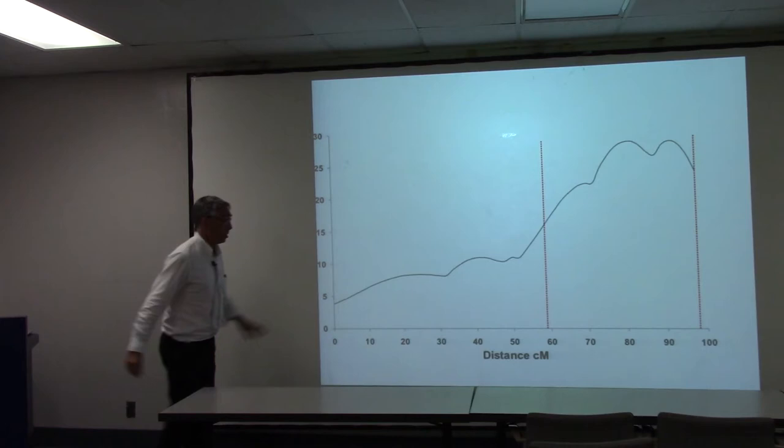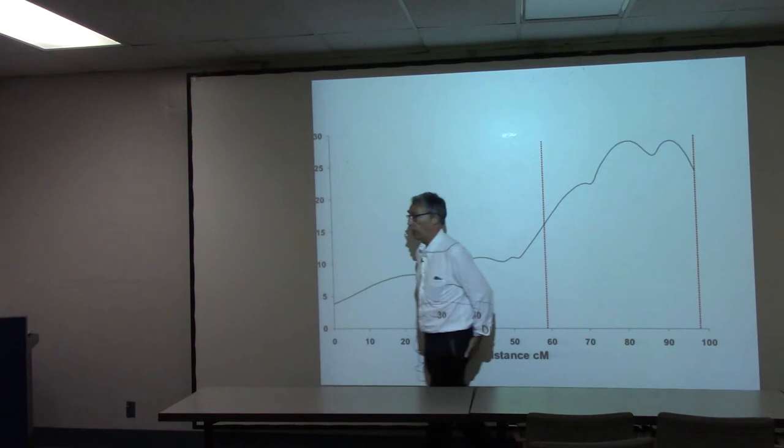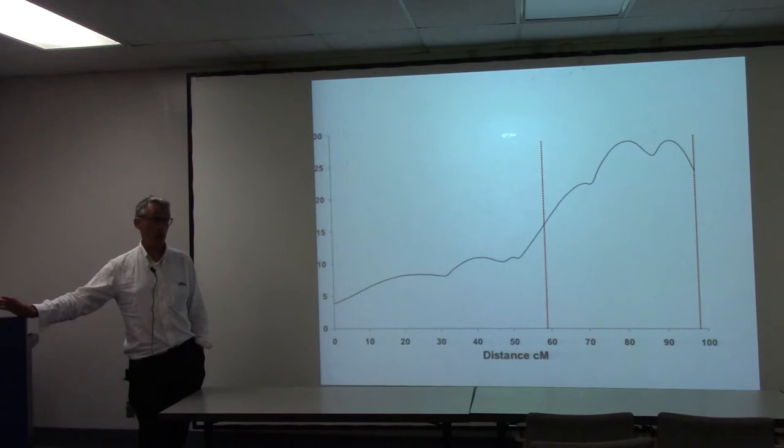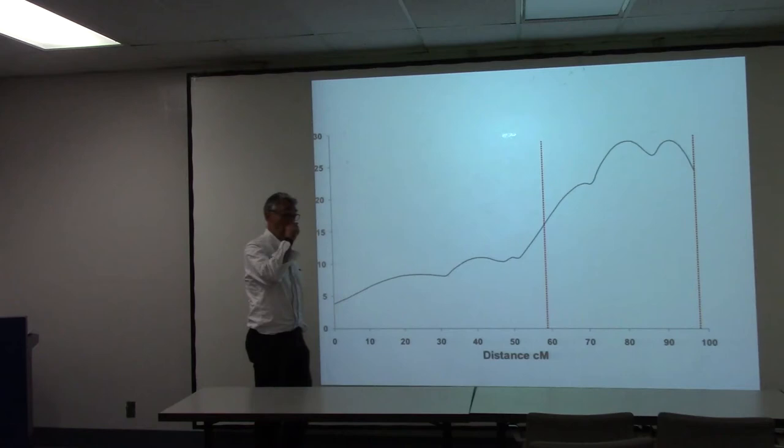We have been thinking about how to reduce this interval to ideally get down to the causative variant, or at least the gene. The nice thing about working in model organisms is that you can do experiments — unlike in humans where you're stuck with the material you have. In model organism genetics you can think and work out what might be a way to address this problem.